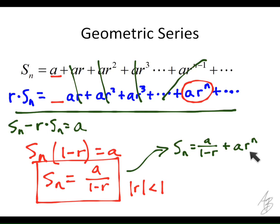S sub n is really going to be a over one minus r plus a times r to the n. And we're going to have this little term here. But if n goes to infinity, then this right here, when r is less than one, is going to do what? It's going to be zero.